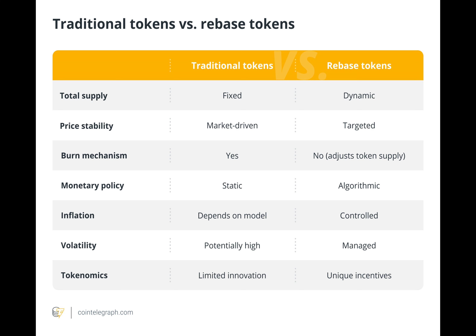A positive rebase, for example, increases the token supply and reduces the balances of current holders if the token's price climbs above the target. On the other hand, a negative rebase lowers supply and increases the value of existing holdings if the price drops below the target.